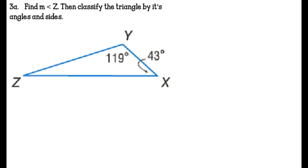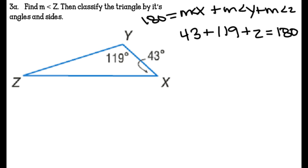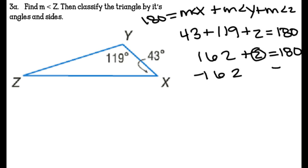Find the measure of angle Z, then classify the triangle by its angles and sides. We know that the measure of angle X plus the measure of angle Y plus the measure of angle Z all equal 180 degrees. Angle X is 43 degrees, angle Y is 119 degrees, and angle Z is unknown. So 43 plus 119 equals 162, plus Z equals 180. Subtracting 162 from both sides, Z equals 18 degrees.